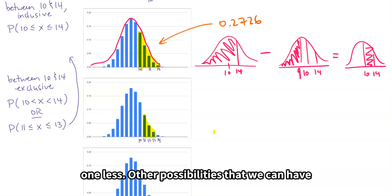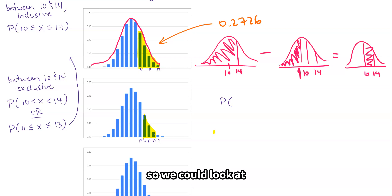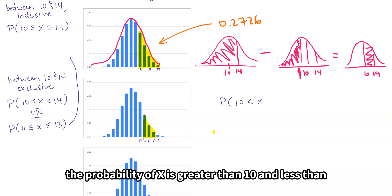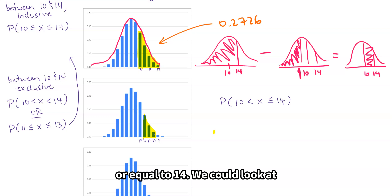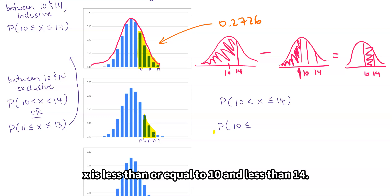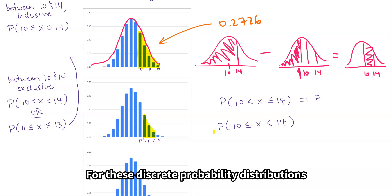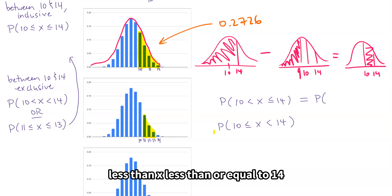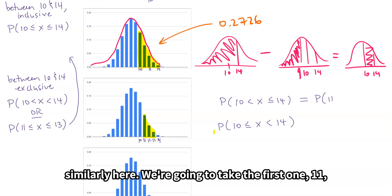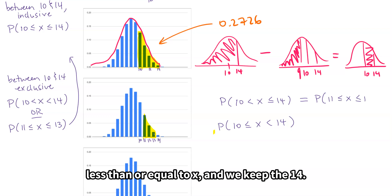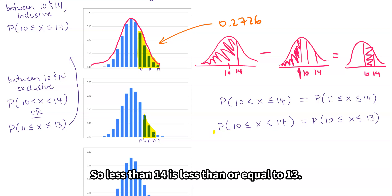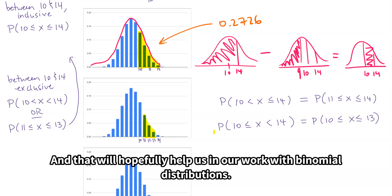Other possibilities include a combination of including and excluding. For example, P(x > 10 and x ≤ 14), or P(x ≤ 10 and x < 14) — a mixture. For discrete probability distributions, P(10 < x ≤ 14) translates to 11 ≤ x ≤ 14, so we take the first value as 11 and keep the 14. Less than 14 is equivalent to less than or equal to 13. That will hopefully help us in our work with binomial distributions.